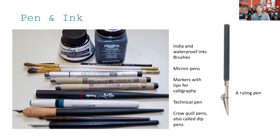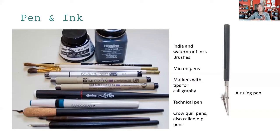One tool I use a lot is what are historically called crow quill pens — now referred to as dip pens. They have different types of nibs, not quite the same as calligraphy nibs, though they can be used for calligraphy. They tend to have a scratchier tip but are very easy to use. I'd recommend keeping them clean — you can remove rust with sandpaper — and dry them after every use.